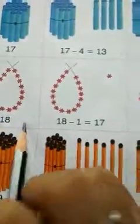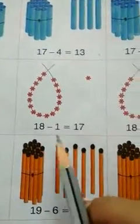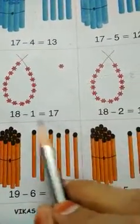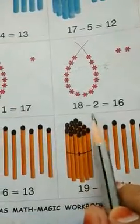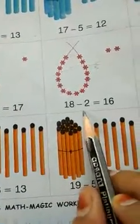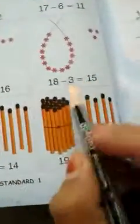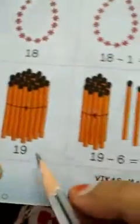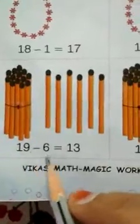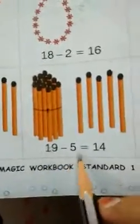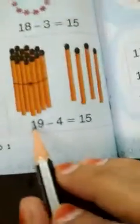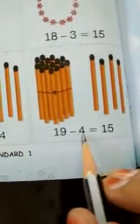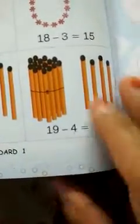18 minus 5 is equal to 13. 19 minus 5 is equal to 14. 19 minus 4 is equal to 15.